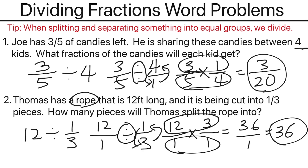So these are two word problems that involve dividing fractions. The first one takes the object and splits it into equal groups, where the second one takes the object divided by the size of the equal pieces to get the total count of pieces. We use keep, switch, and flip whenever we divide fractions. If you ever wonder why we do keep, switch, and flip, I do have a video that explains that in detail, which you can view at the end of this clip. Hopefully this video is helpful to you. Thank you for watching.